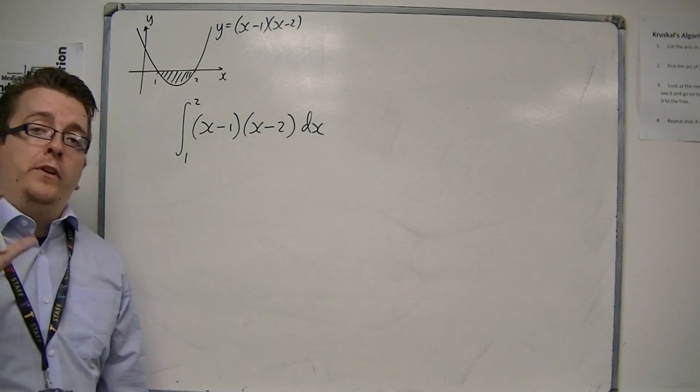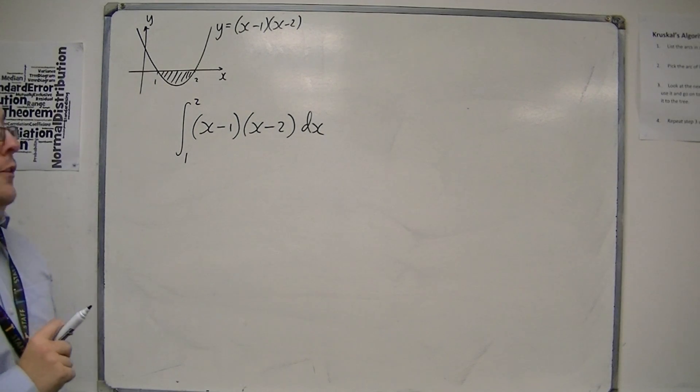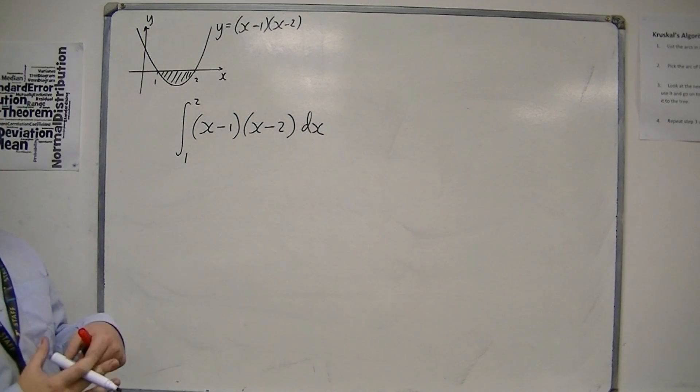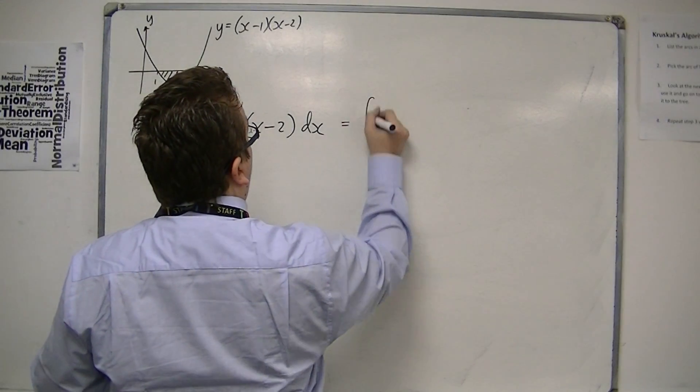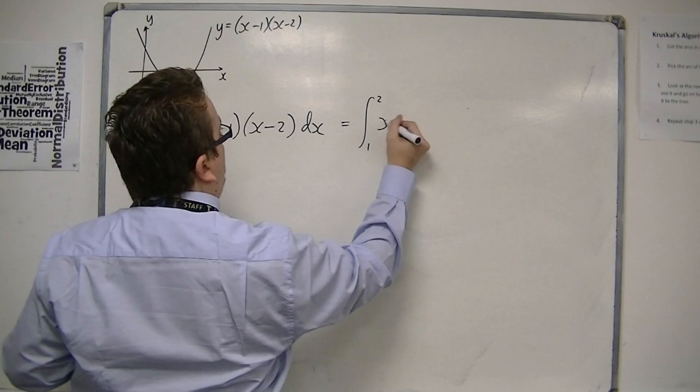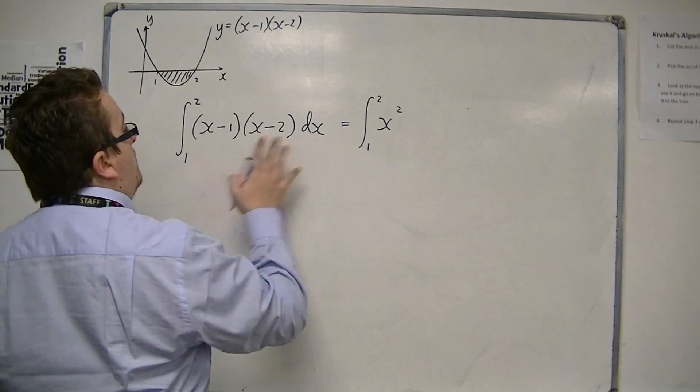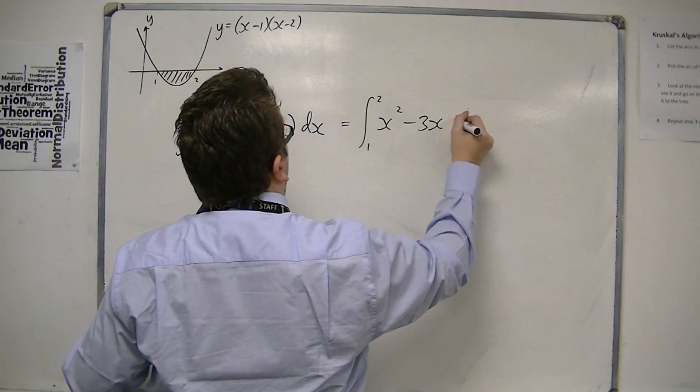Now you must expand the brackets. We don't currently have a method that will allow us to integrate otherwise. So you must expand the brackets first. So we're going to get x squared minus 3x plus 2.